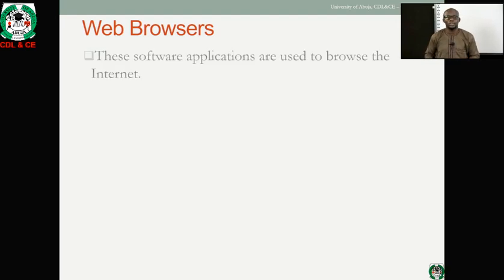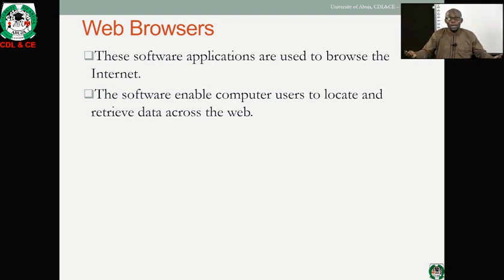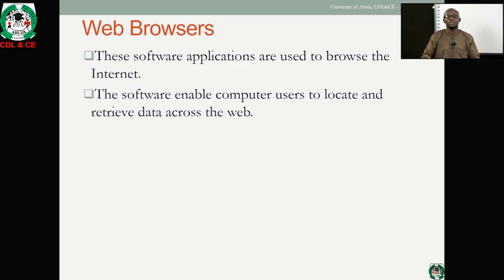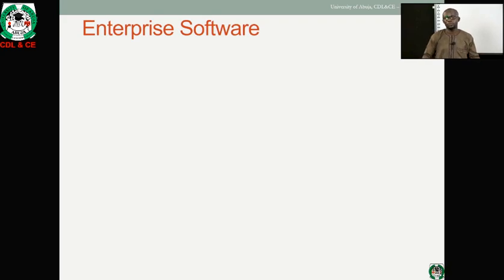The web browser gives us a gateway to the internet, allowing us to access information and resources online. To access your Facebook account, check your Gmail, or view your semester results online, you need a web browser. Typical examples of web browsers include Google Chrome, Internet Explorer, Firefox, Microsoft Edge, Safari, and Opera — all of which give us the ability to access resources available on the internet.